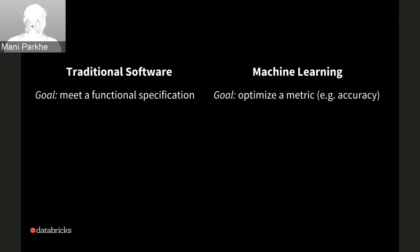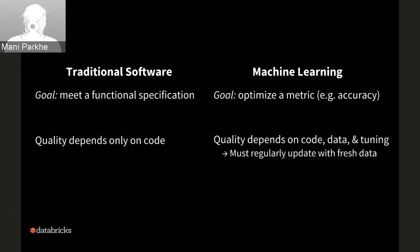In traditional software, let's say you're building a credit card transaction system or a functional verification system. You start with a functional specification — you know exactly the terms and conditions and what product you're trying to build. The goal is pretty clear. In machine learning, the goal is to optimize a metric, so there is no perfect answer — you're just trying to get better and better.